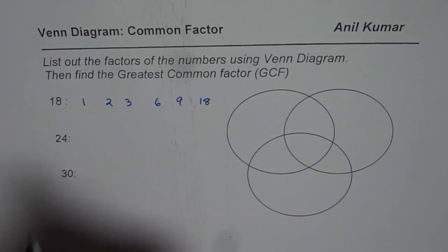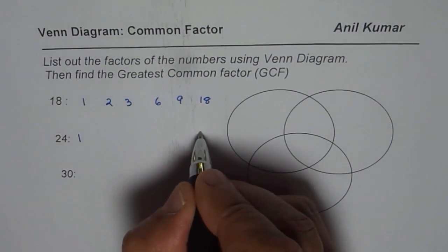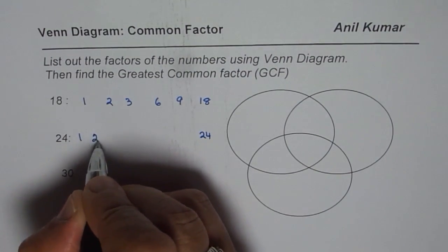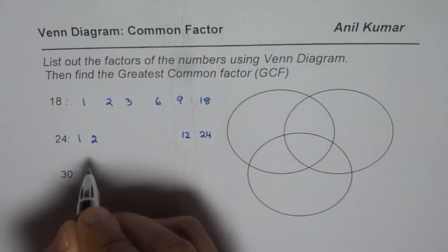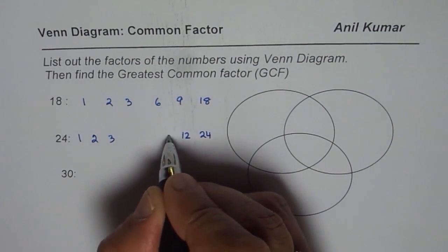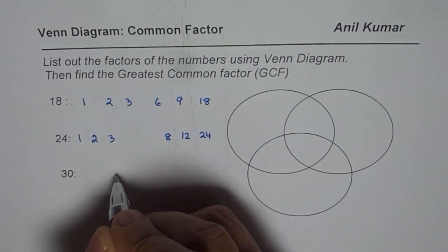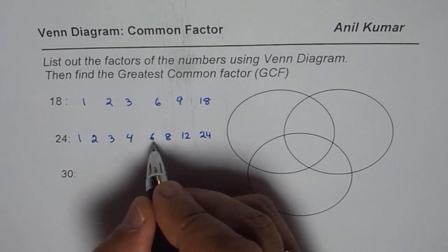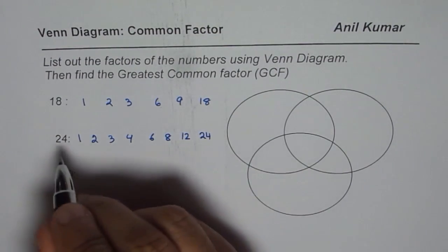Now write down factors for 24. 1 times 24, always begin with 24. Then 2 times 12, 3 times 8, 4 times 6, and then 6 times 4. So these are the factors of 24.